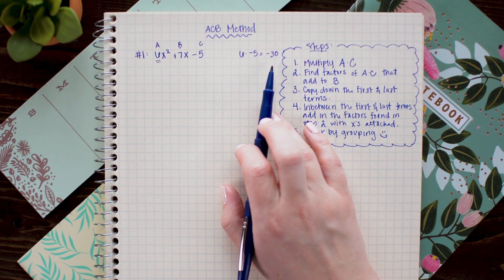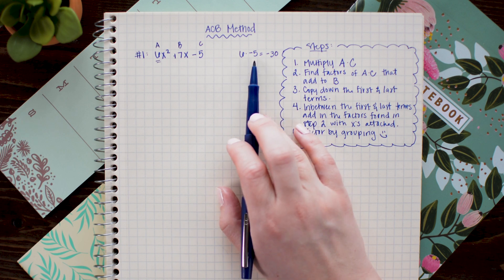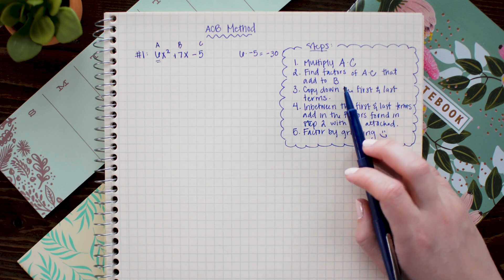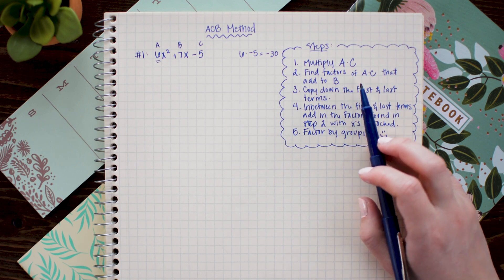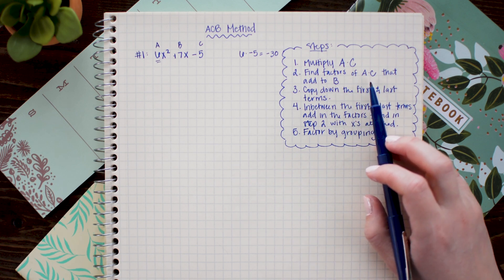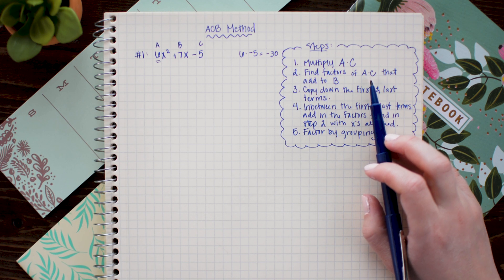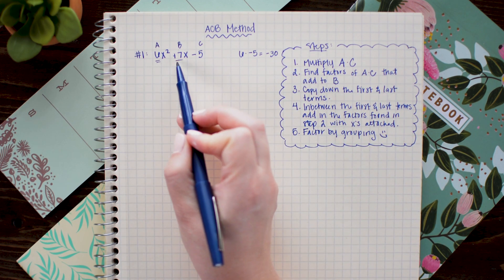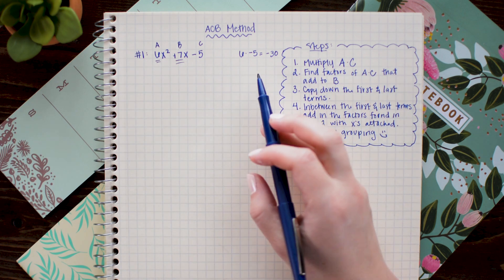When I do that off to the side I see that 6 times negative 5 equals negative 30. Now I'm going to move on to step 2 which is to find factors of a times c that add to b. So I want factors of negative 30 that add to positive 7. First I'm just going to list out all the factors I can think of of negative 30.